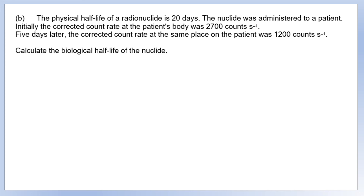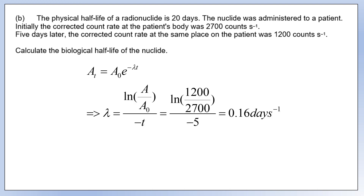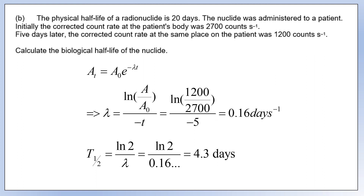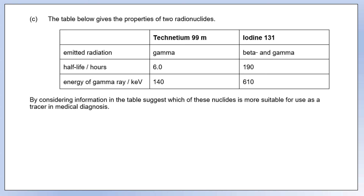The physical half-life of a tracer is 20 days. Administered to a patient, the corrected count rate (count rate minus background) is 2700 counts per second initially and 1200 counts per second five days later. We calculate the biological decay constant using the activity equation, working in days to get the half-life in days. The resulting biological half-life is 4.3 days.